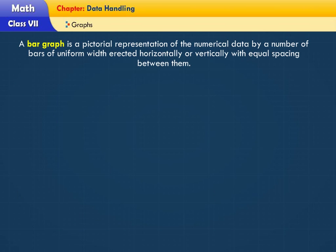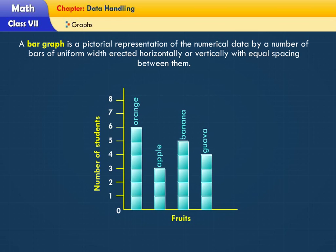A bar graph is a pictorial representation of the numerical data by a number of bars of uniform width erected horizontally or vertically with equal spacing between them.